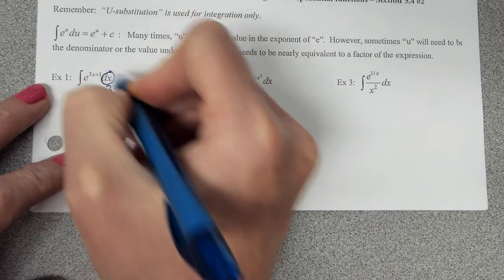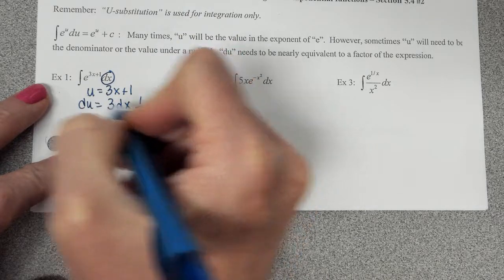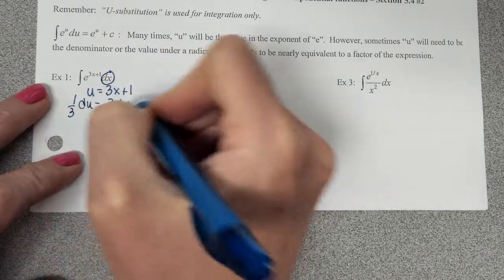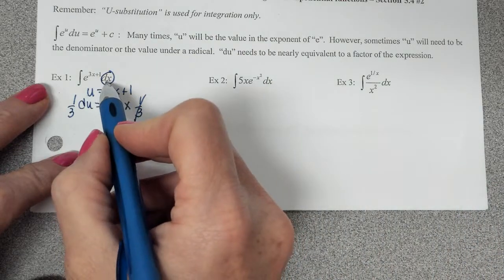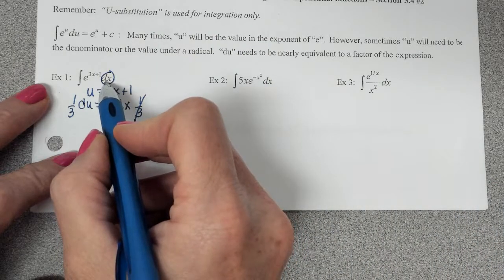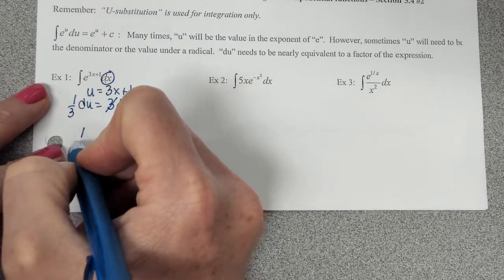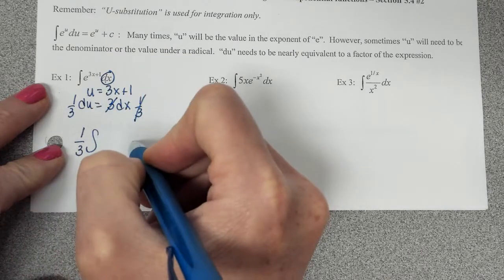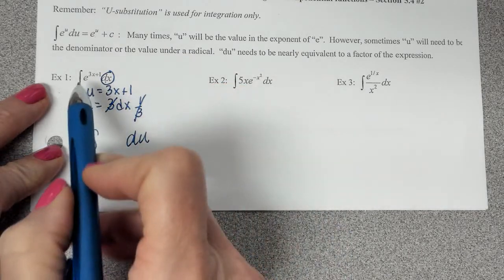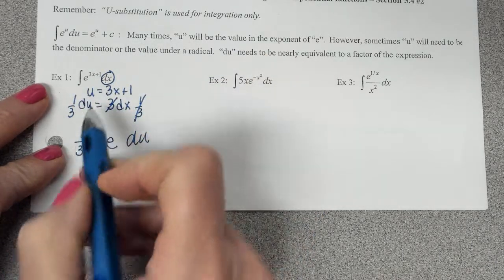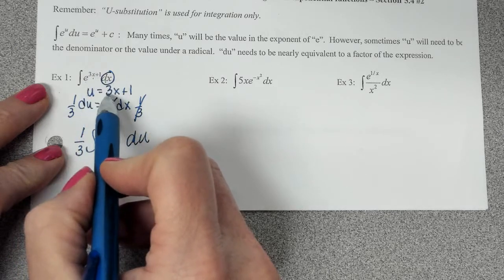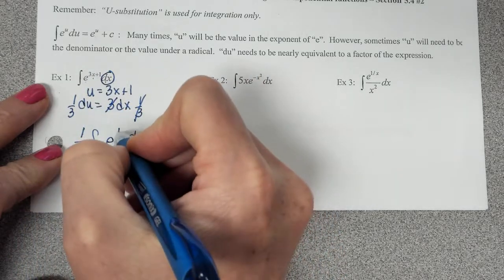If I want to just replace dx, I would have to do one-third to cancel those out. So wherever I have that dx right there in that circle, that's going to get replaced with one-third du. Looking at the rest of the problem, this is our e. What is happening to e? Well, it's getting raised to the u power.